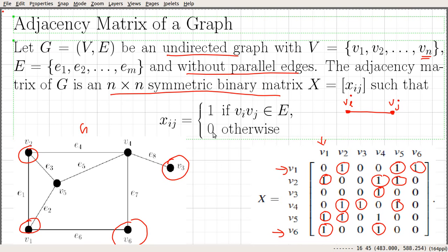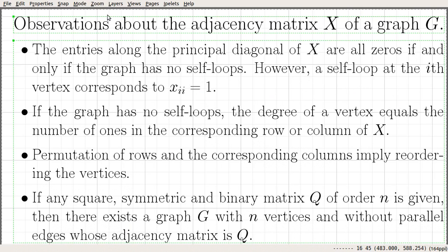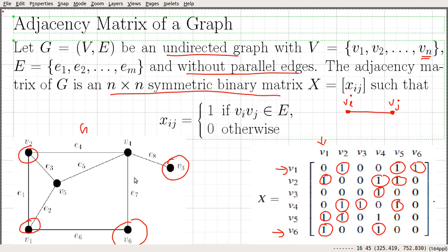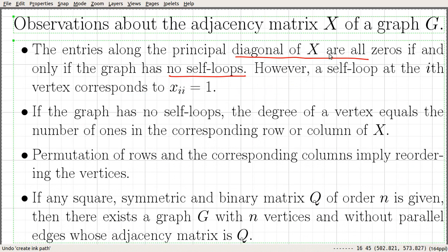Let us look at some basic properties of this matrix. The entries along the principal diagonal of X are all zeros if and only if the graph has no self-loop. For example, looking at this particular graph, we can see that there are no self-loops, so every entry along the principal diagonal is zero. However, if we could have loops — say an edge from V4 to V4 — then we would set X44 equal to 1. So a self-loop at the i-th vertex corresponds to Xii equal to 1.